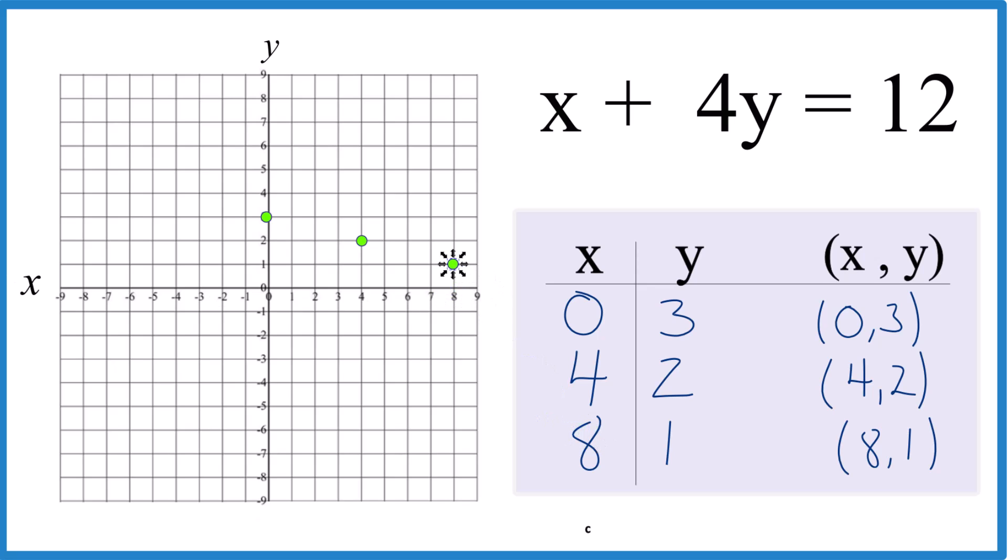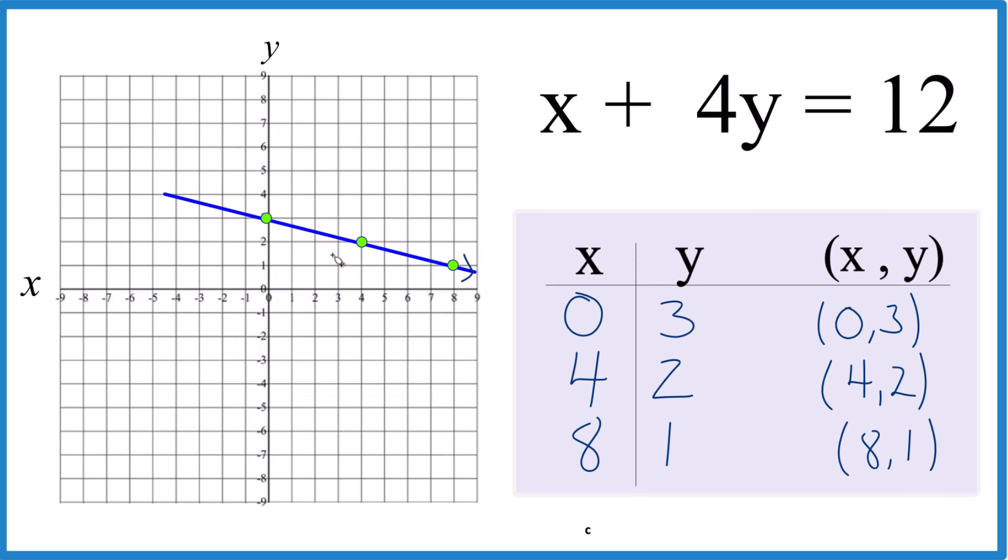You can see they all line up. So let's put a line through that. We'll put arrows to show that it goes to infinity. And that is the graph for x plus 4y equals 12, using a table of values.